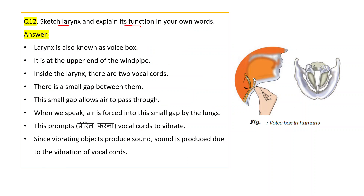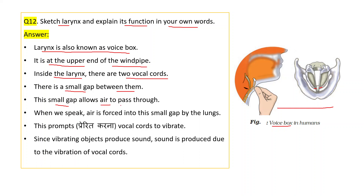Sketch the larynx and explain its function. The larynx is also known as the voice box. It is at the upper end of the windpipe. Inside the larynx there are two vocal cords with a small gap between them. This gap allows air to pass through. When we speak, air is forced into this small gap by the lungs, which prompts the vocal cords to vibrate. Sound is produced due to the vibration of the vocal cords.